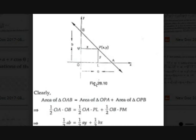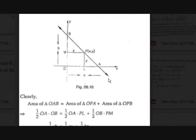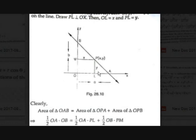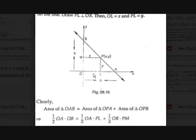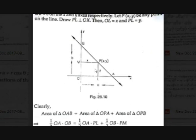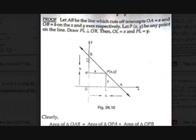Now we take two triangles. The area of triangle AOB equals the area of triangle OPA plus the area of triangle OPB. In triangle OAB, the base is a and height is b, so the area is (1/2)ab. In triangle OPA, base is OA which is a and height is PL which is y, so it is (1/2)ay. In triangle OPB, base is b and height is PM which is x, so it is (1/2)bx.